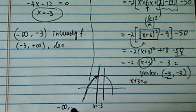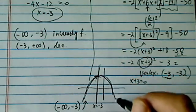So from negative infinity to -3, we have an increasing function, and from -3 to positive infinity, we have a decreasing function. Let's check.